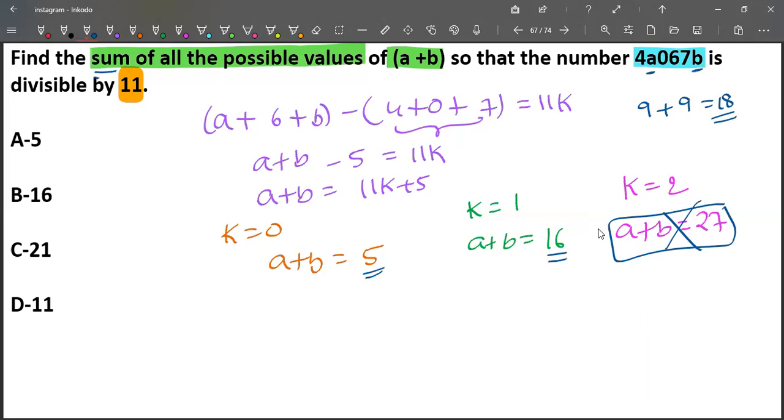They are asking for the sum of these values. How much is it? 16+5 = 40.